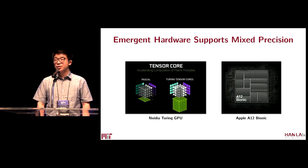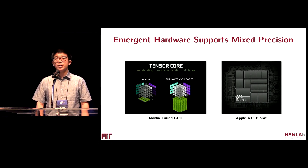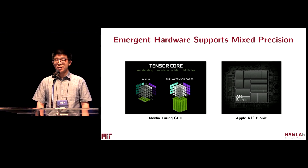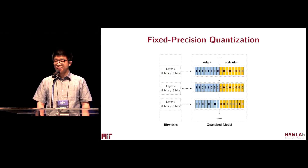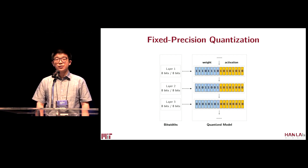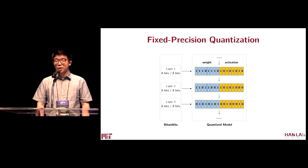Emergent DNN accelerators start to support mixed precisions. For example, NVIDIA Turing GPU with Tensor Core supports matrix multiplication with mixed precisions. Apple A12 Bionic chip also provides this feature. However, conventional algorithms still use fixed precision quantization.